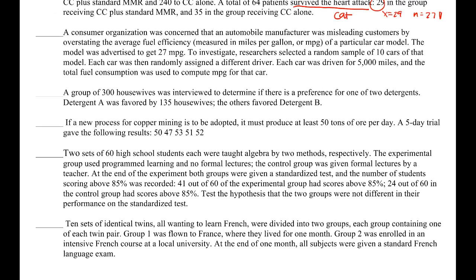A consumer organization was concerned that an automobile manufacturer was overstating the average fuel efficiency. It was advertised to get 27 miles per gallon. They selected a random sample of 10 cars; each was driven for 5,000 miles and total fuel consumption was used to compute MPG. We're dealing with an average, and it appears we only have one group — just this one model of car. No sigma is given, so the only possible option is B — a T-test for means — testing whether the mean is actually less than 27 miles per gallon.